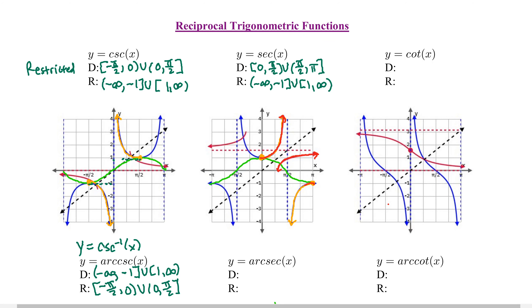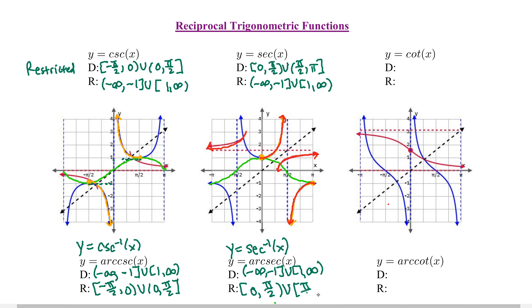Reflecting the yellow portion of the secant curve across the line y equals x is a challenging reflection—one branch maps to the other. The domain and range of arc secant, also known as inverse secant, are simply reversed from secant. So the domain of inverse secant is negative infinity to negative 1 union 1 to infinity, and the range is from 0 to pi over 2, union pi over 2 to pi, with a parenthesis at pi over 2.